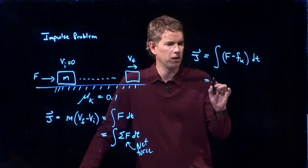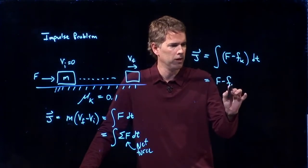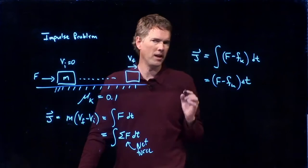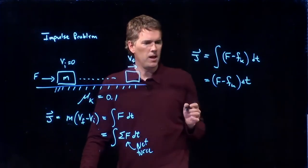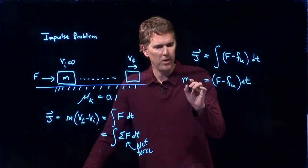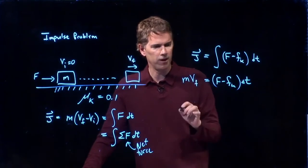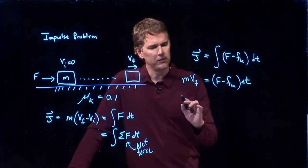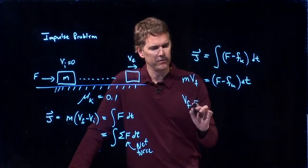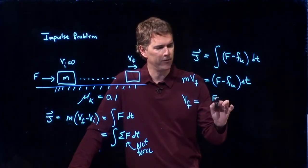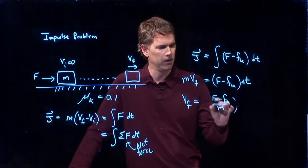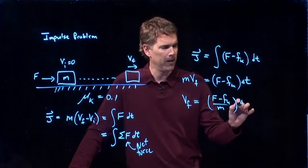Both of those are constant, so they can come out of the integral. And so we can write this as f minus fk delta t. And we know from before that that's equal to m v final. If it started from rest, vi is equal to 0. And so we can write vf is equal to f minus f sub k all over m, and I'm going to multiply that by delta t.